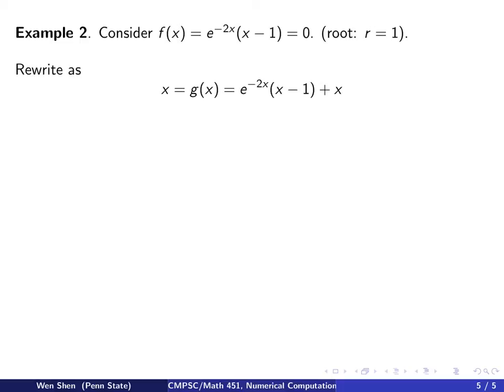So we rewrite it in the way that was suggested. x equals to gx, gx simply will be f of x plus x. Now since we know r equals to 1 is the root, we are kind of in a cheating mood. Let's make an initial guess really, really nice, very close, 0.99. So hopefully it shall converge pretty fast. Or does it?